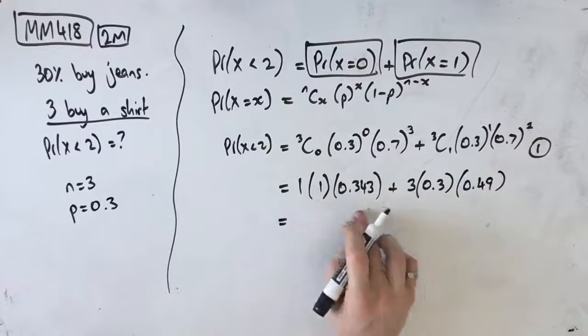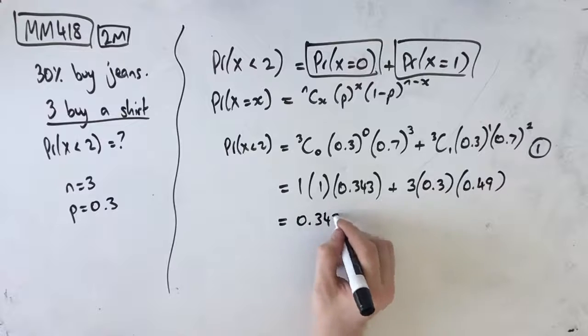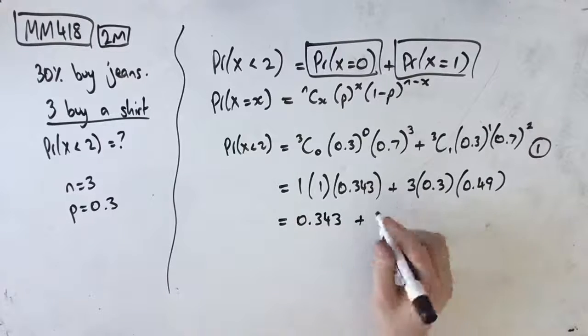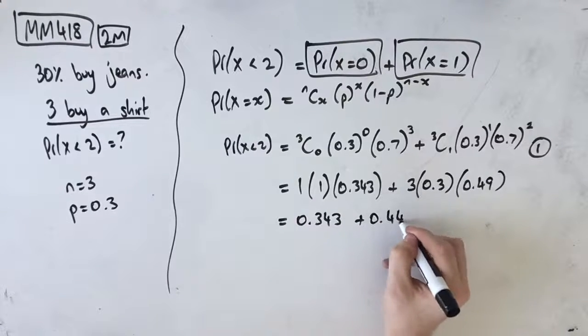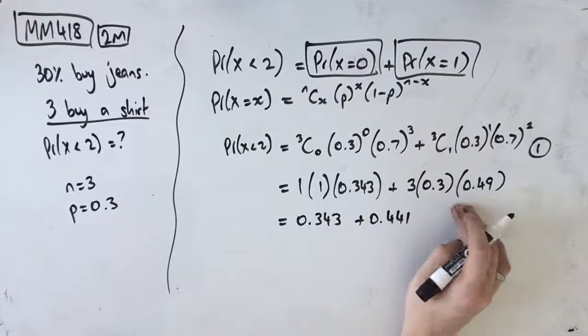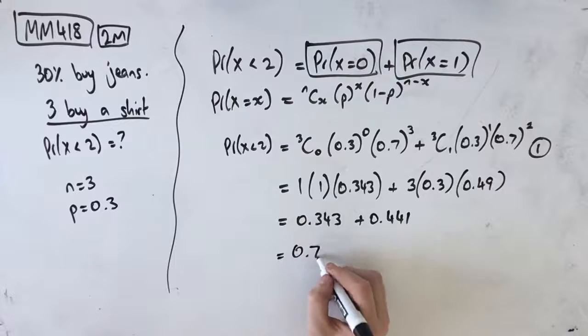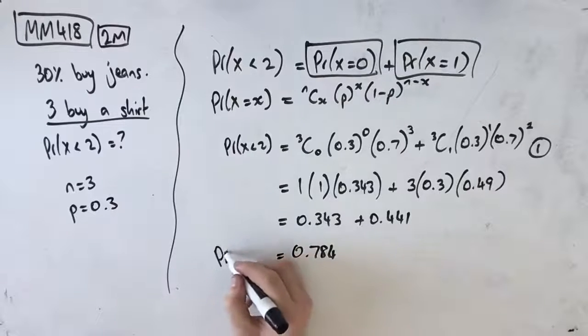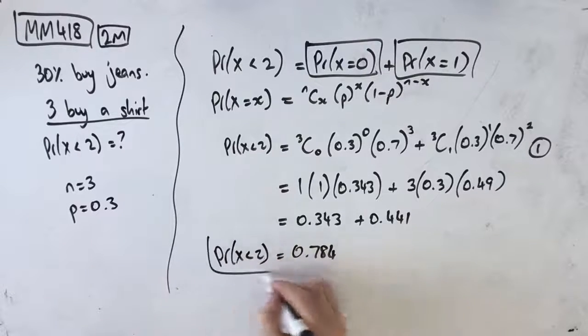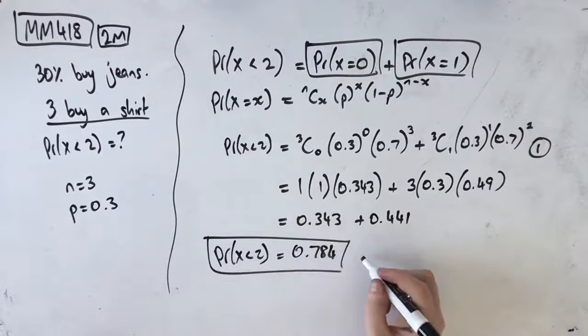Taking all this out, 1 times 1 times 0.343 is still just 0.343, plus 0.441. You might have to do some long multiplication with this stuff. And then adding these together, we get 0.784, which is the probability that less than two of them buy jeans. That's our second mark.